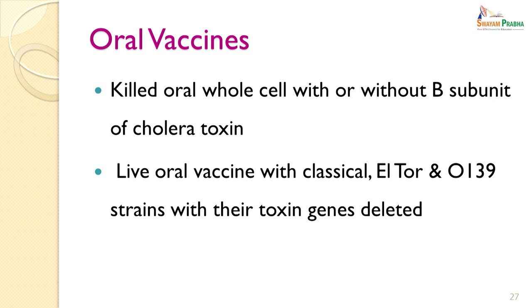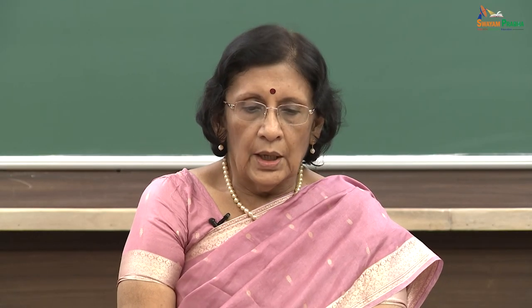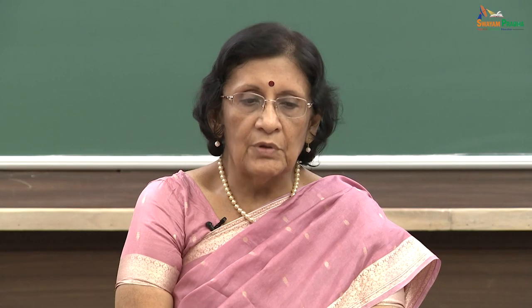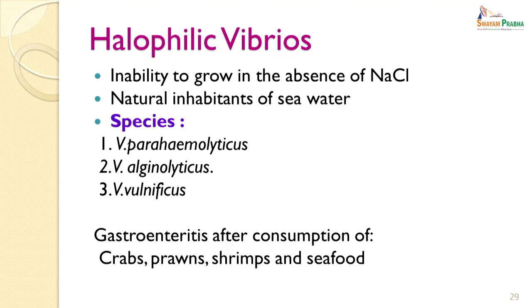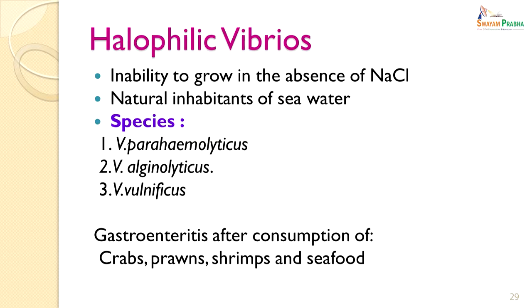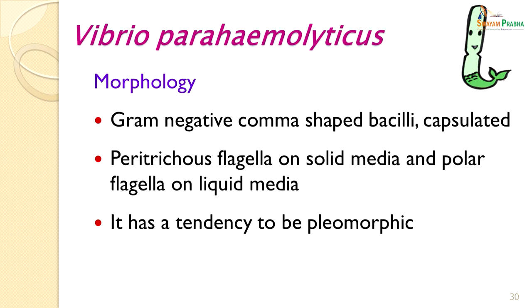An outbreak of cholera in any area has to be notified even to the WHO. The other diarrhoeogenic Vibrios — apart from Vibrio cholerae — are the halophilic Vibrios. These halophilic Vibrios are not able to grow in the absence of sodium chloride; they are natural inhabitants of sea water. The species of halophilic Vibrios which can infect humans are Vibrio parahaemolyticus, Vibrio alginolyticus and Vibrio vulnificus. Gastroenteritis usually occurs after consumption of seafood such as crabs, prawns and shrimps. Let us first have a look at Vibrio parahaemolyticus.